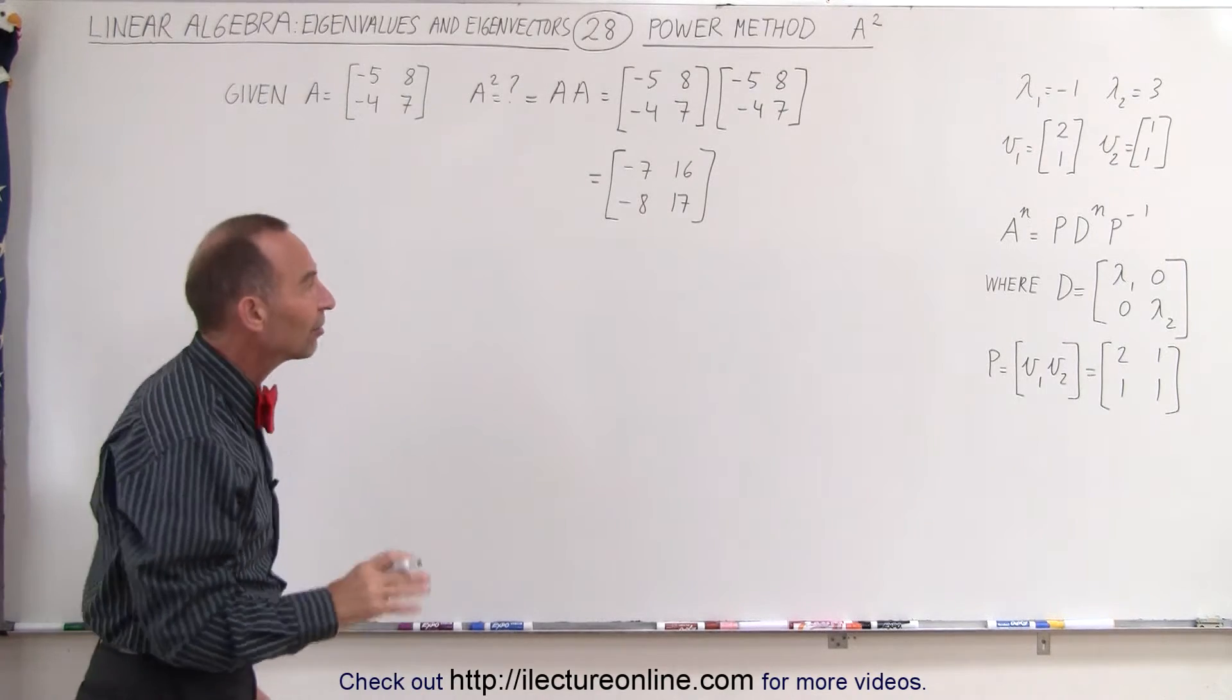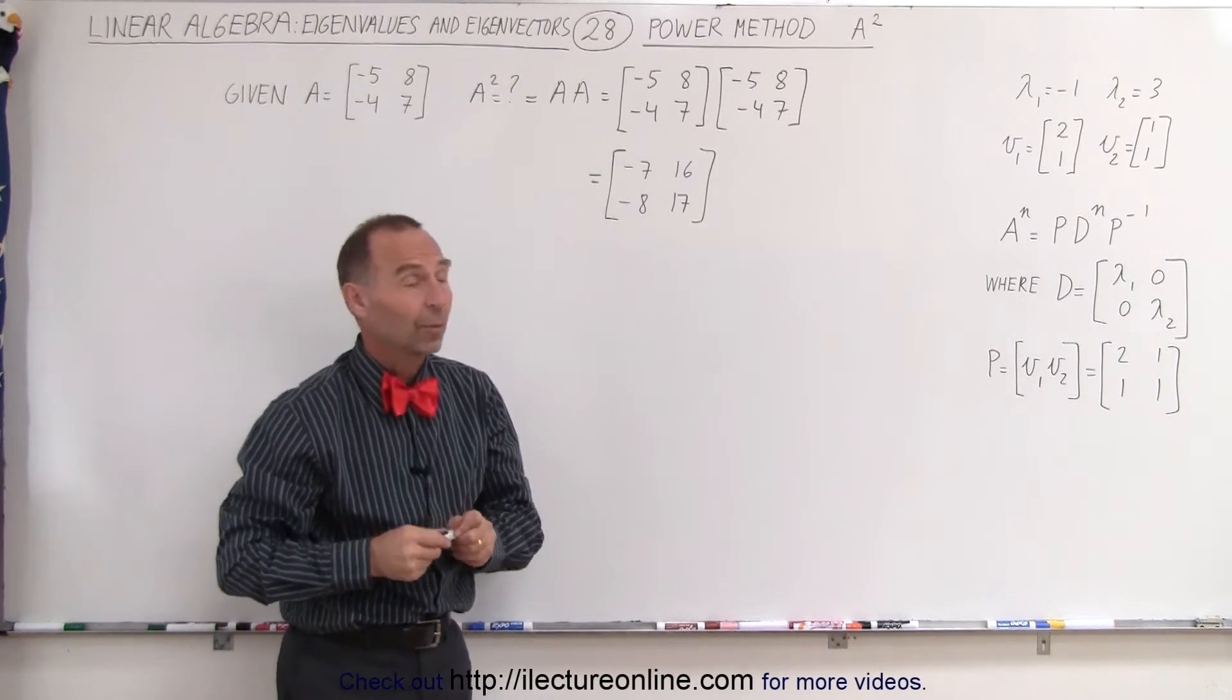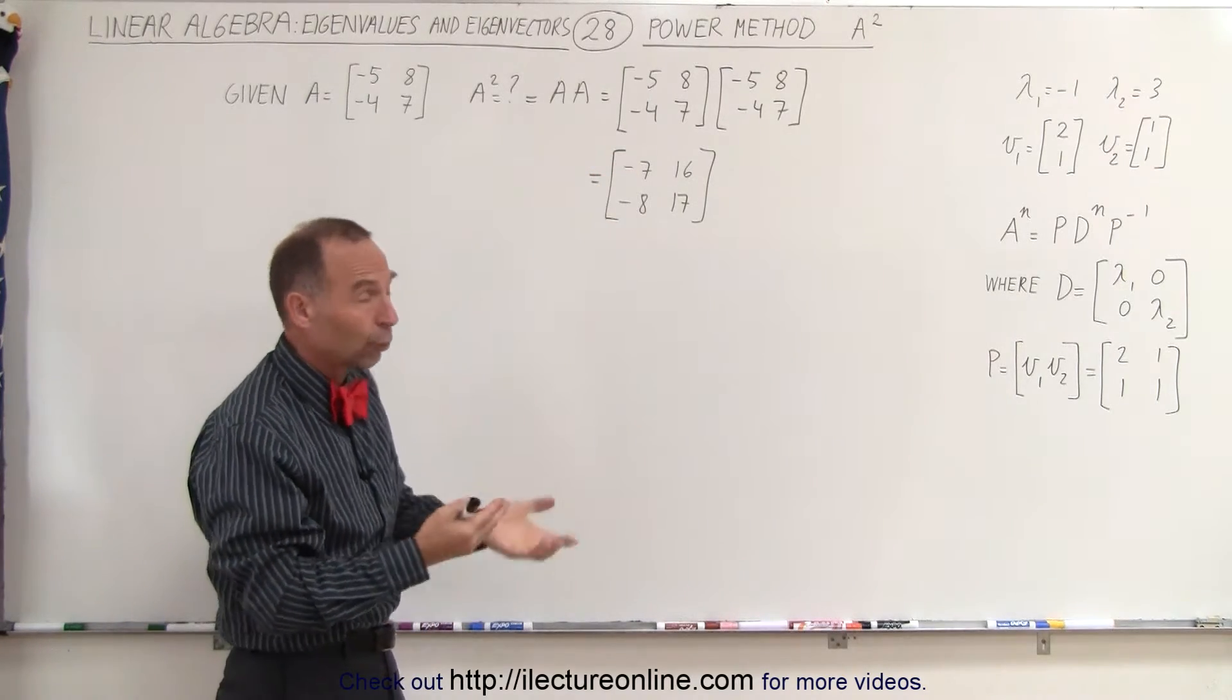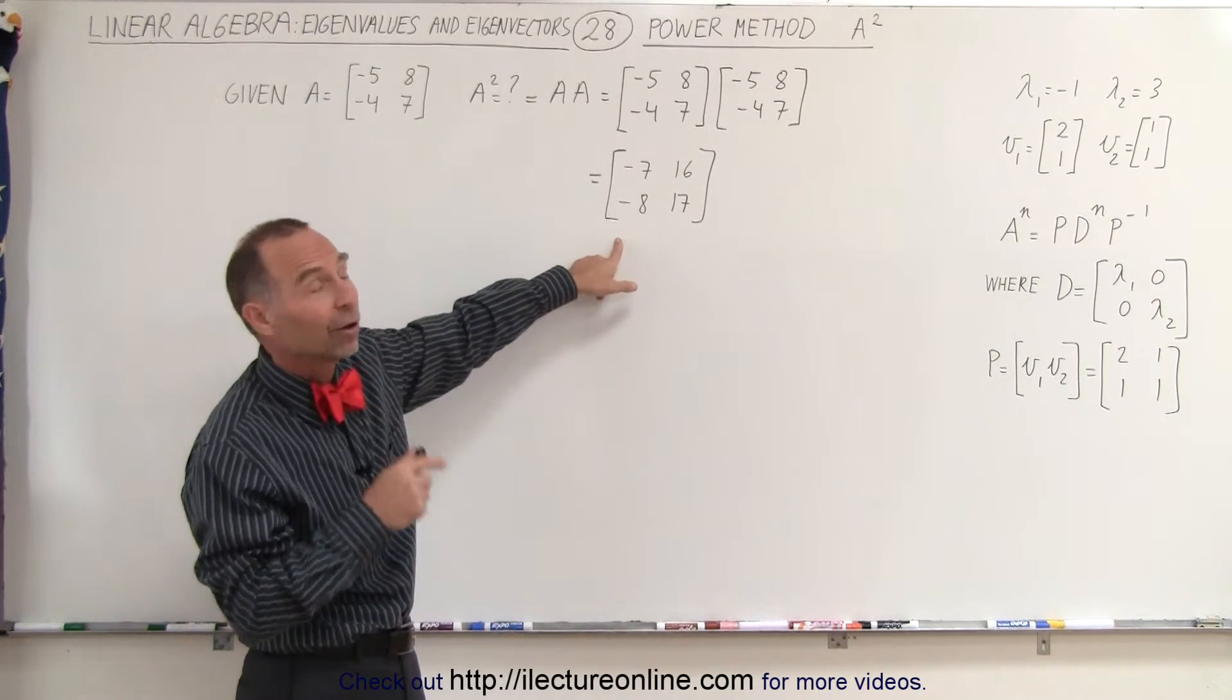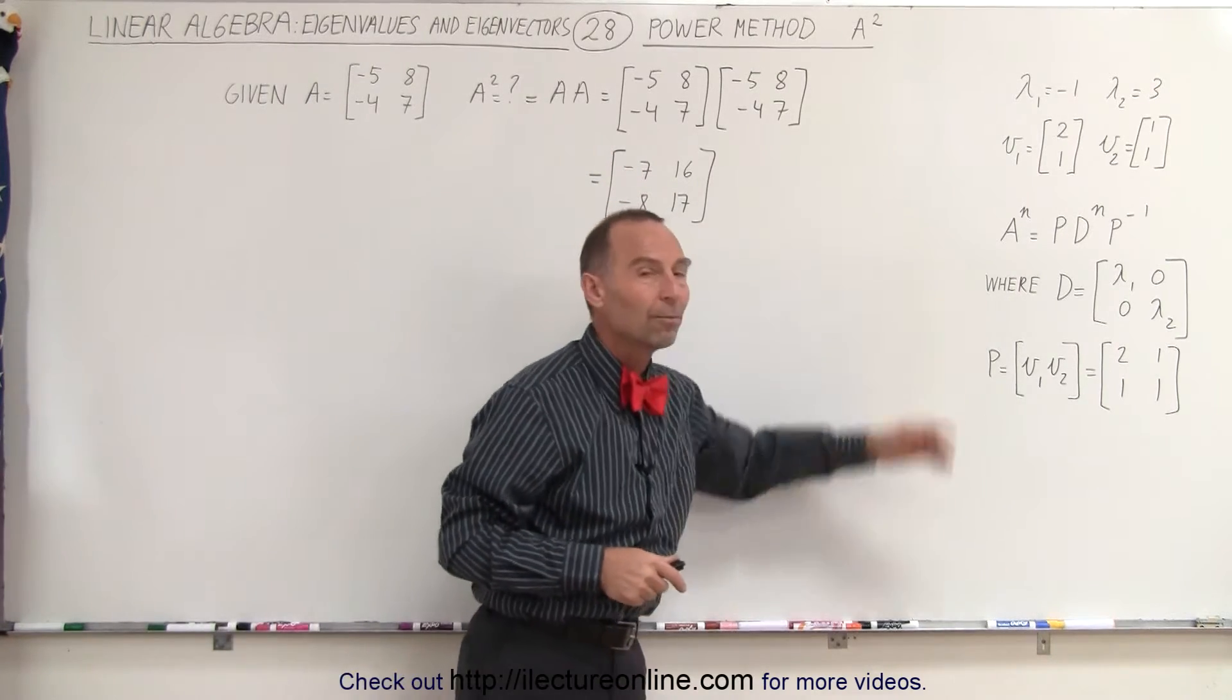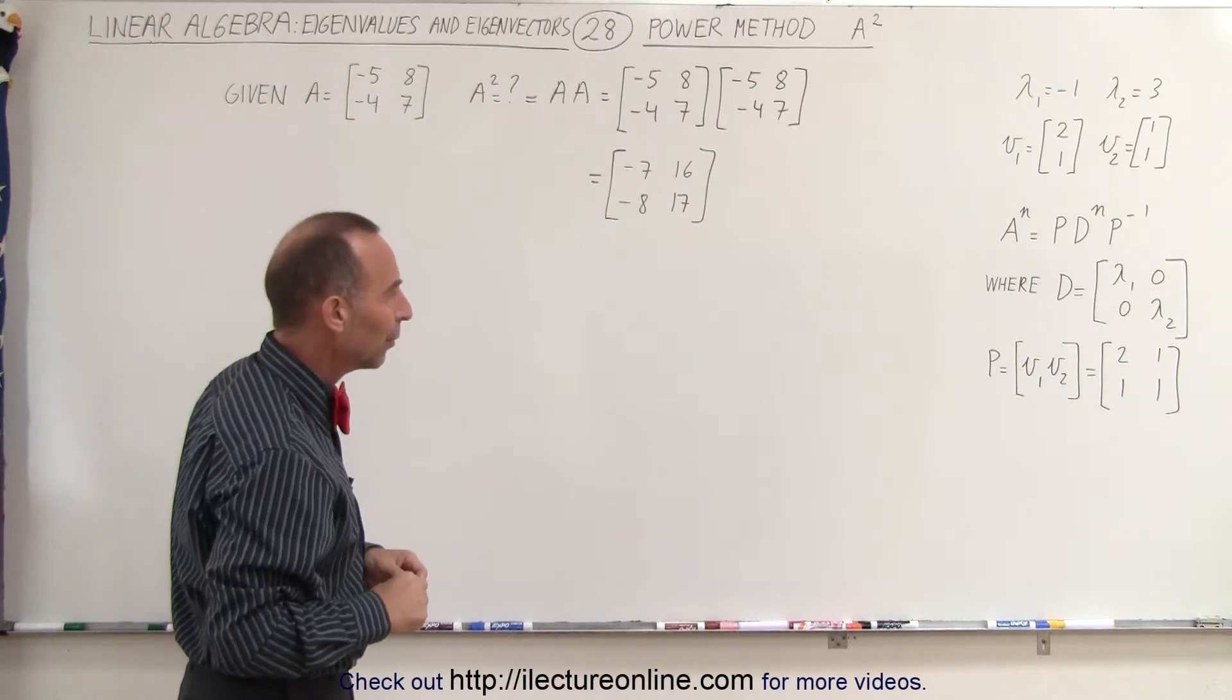Now we're going to find the same result using this method here. Now first you're going to say, why bother with that, because this is actually quite easy to do, and that's of course true. But what if you want to find A to the 5th power, or A to the 100th power? You'd be sitting here for a very long time, trying to do this 100 times, when you can actually do it much easier this way. So let's go ahead and see how it's done that way.